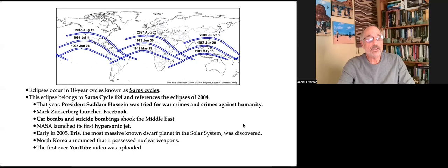Eclipses occur in 18-year cycles, known as Saros cycles. This eclipse belongs to Saros cycle 124, and references the eclipses of 2004. That year, President Saddam Hussein was tried for war crimes and crimes against humanity. Mark Zuckerberg launched Facebook. Car bombs and suicide bombings shook the Middle East. NASA launched its first hypersonic jet.